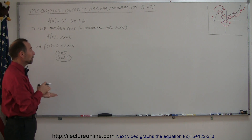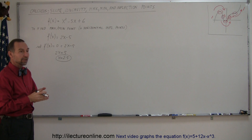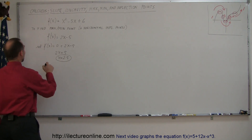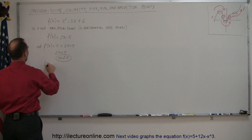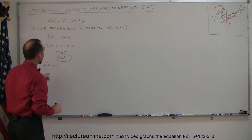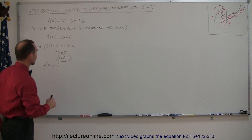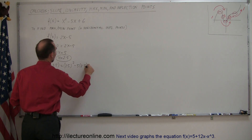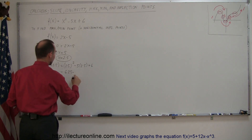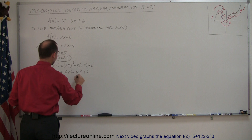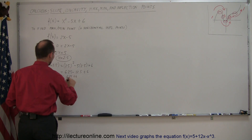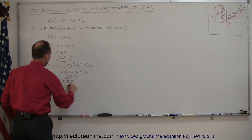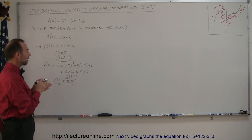Does that mean it's a maximum or a minimum? Not necessarily — it could also be a horizontal inflection point. Before we go further, let's find the corresponding y value. We plug x = 2.5 back into the original function: f(2.5) = 2.5 squared minus 5 times 2.5 plus 6, which equals 6.25 minus 12.5 plus 6, which equals 12.25. So when x equals 2.5, y equals 12.25.